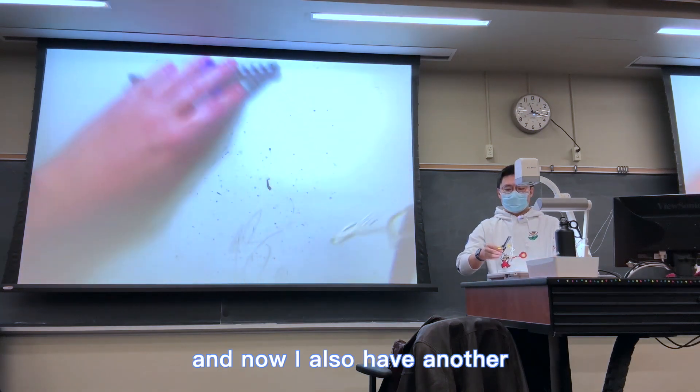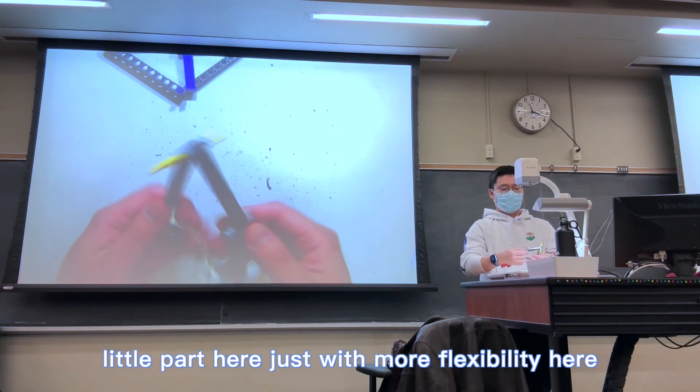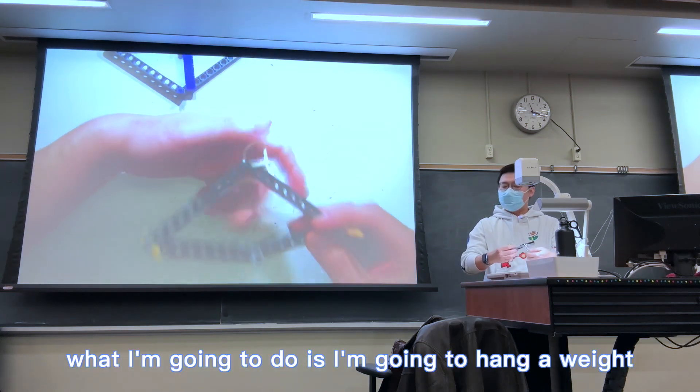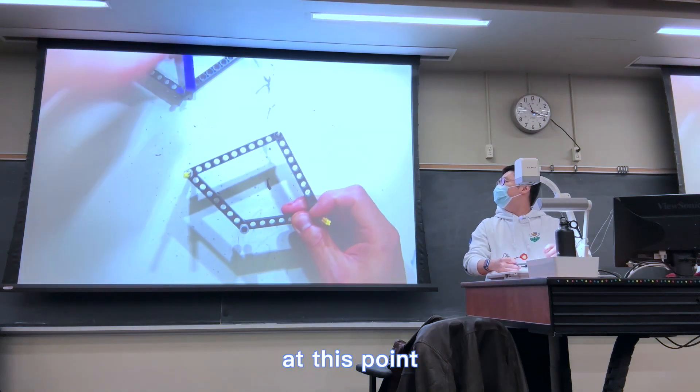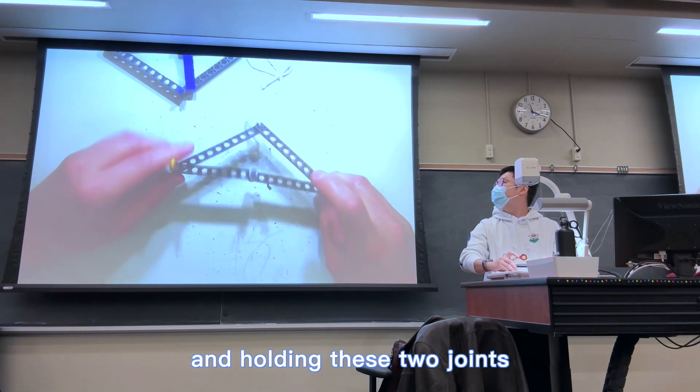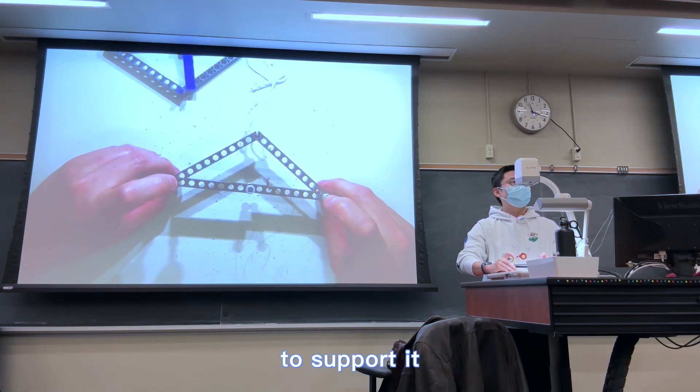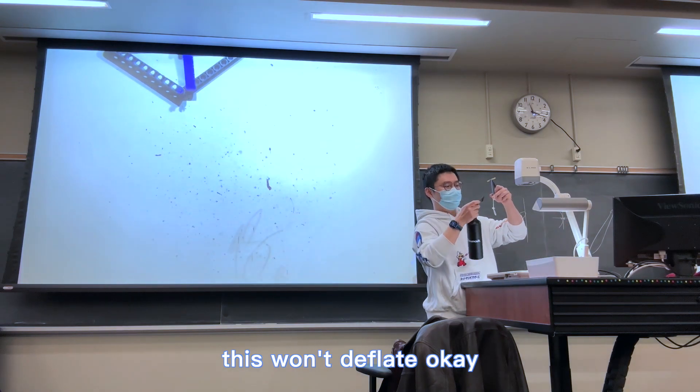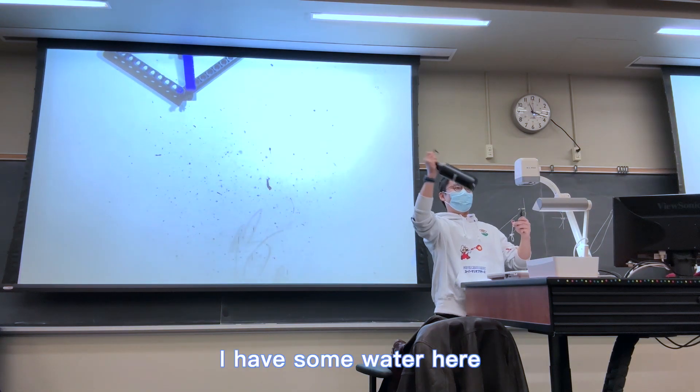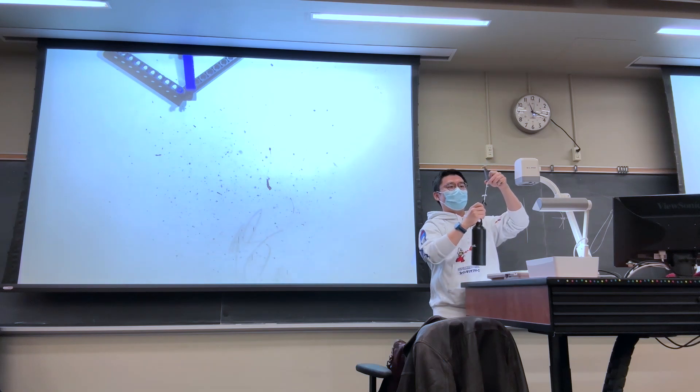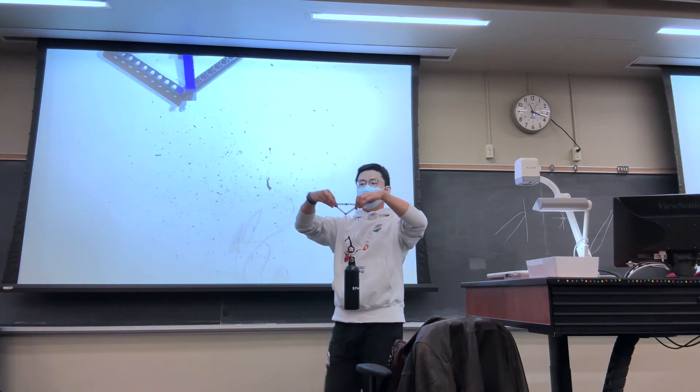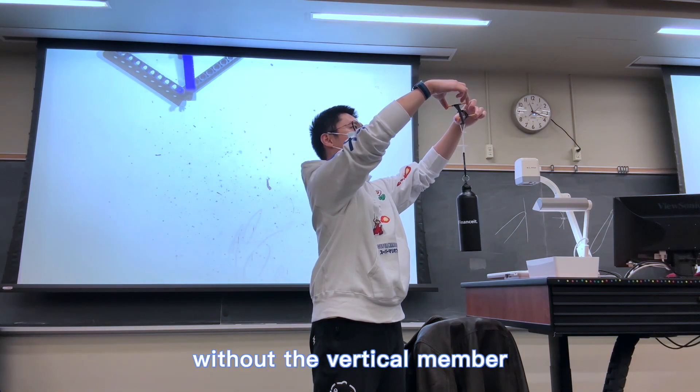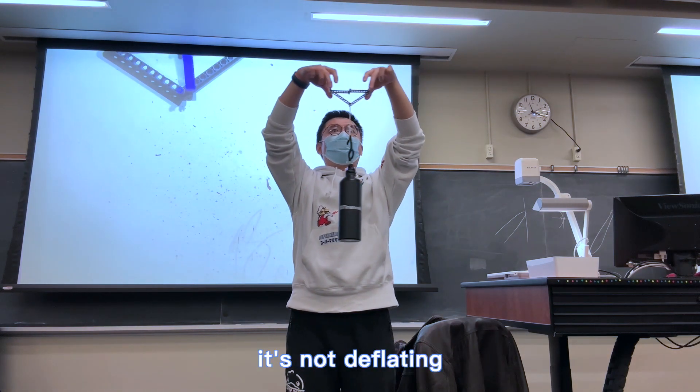And now I also have another little part here, just with more flexibility here. What I'm going to do is I'm going to hang a weight at this point, and holding these two joints to support it. And just to show, this won't deflate. Okay? Add some water here, so it's not empty. Without the vertical member, it's not deflating.